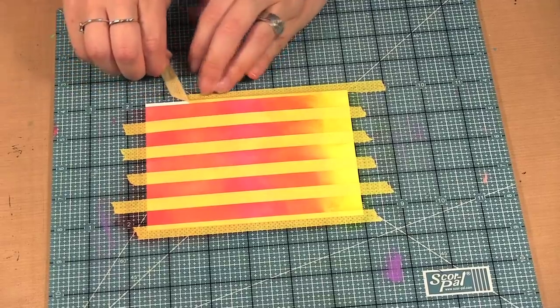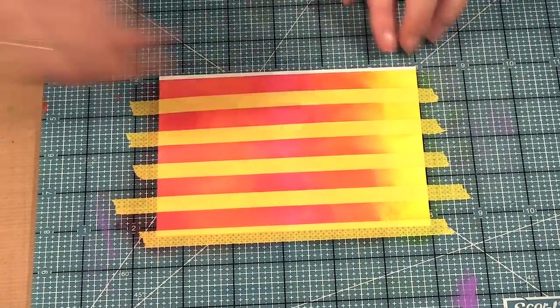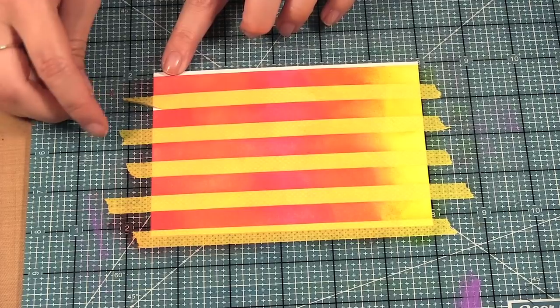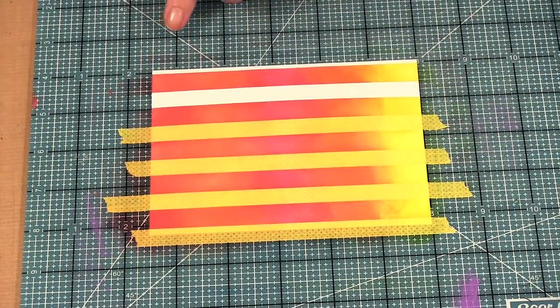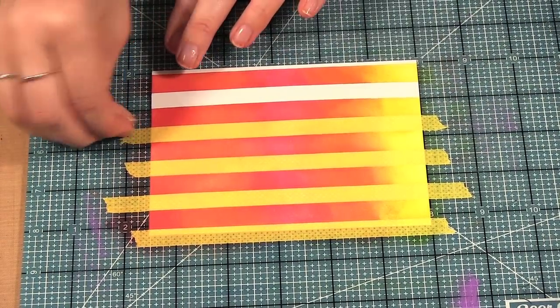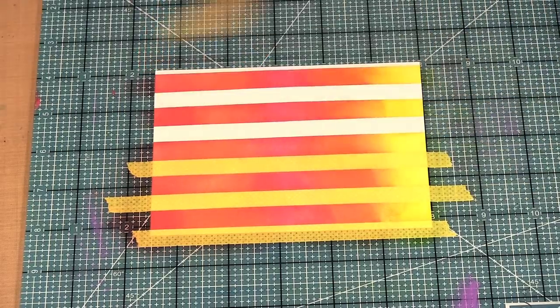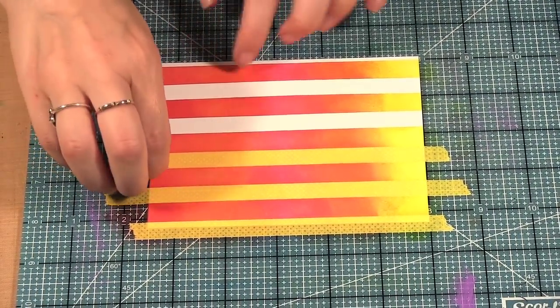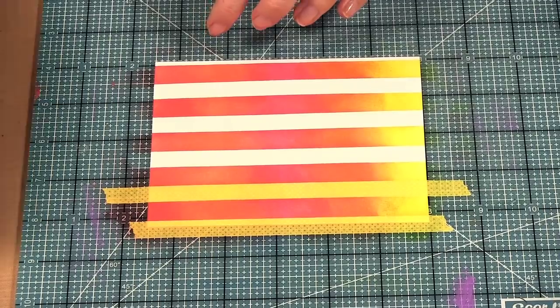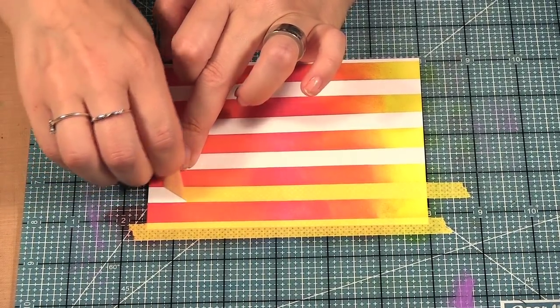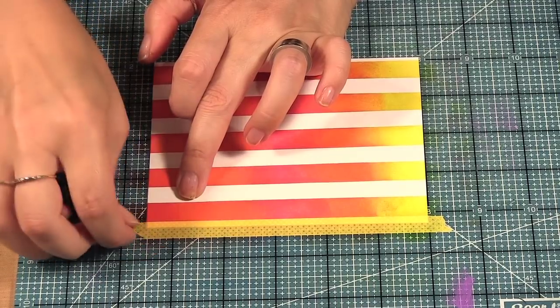So you want to do it carefully in case it did catch on any of the paper. And I also find that when I start by pulling it on an angle, I sometimes get a better result than if you're pulling it straight. I find it may be more apt to rip, so I pull it on an angle.